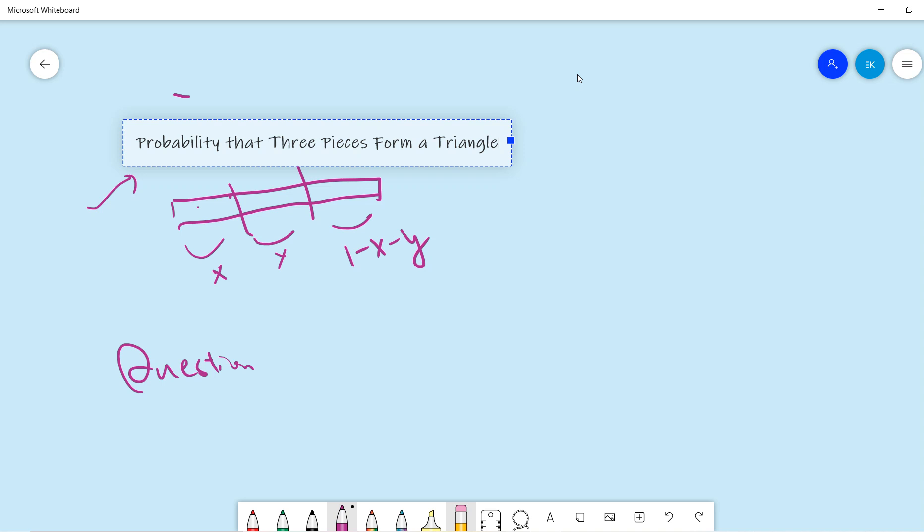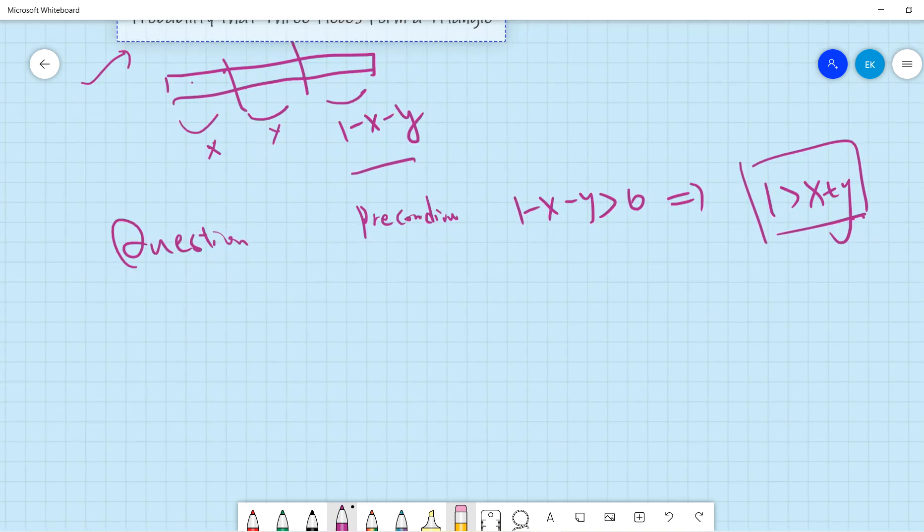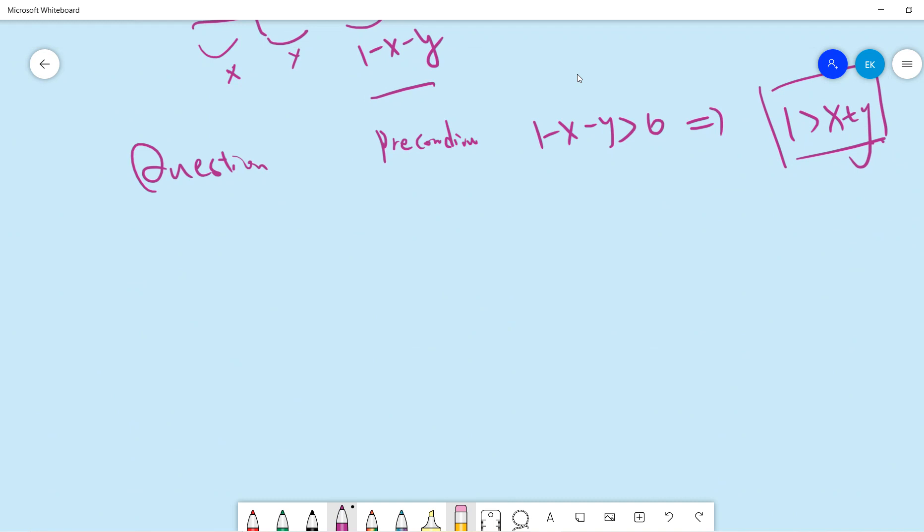So the precondition is that this one must be larger than 1. Okay, so this is the condition we must satisfy. Also, any two sides of the triangle in addition must be larger than the third side.